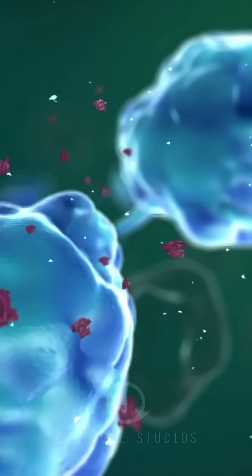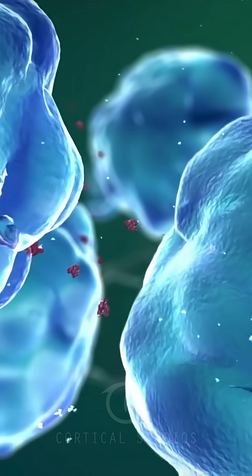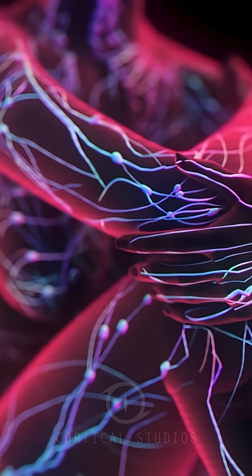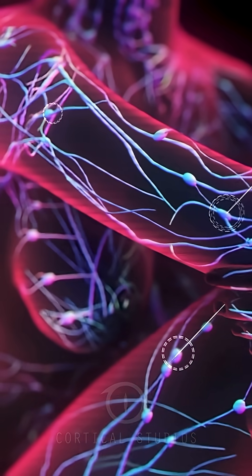The macrophages are, however, not able to destroy all bacteria. The macrophages, therefore, go to the lymph nodes in our body in order to warn other cells of the immune system that an inflammatory response is taking place.